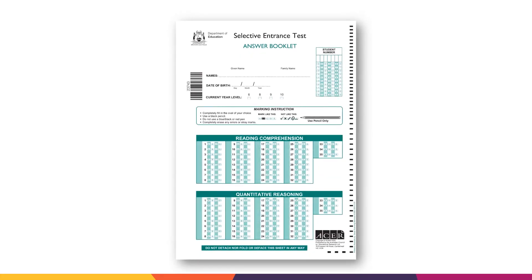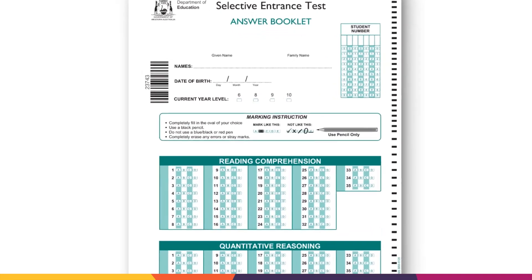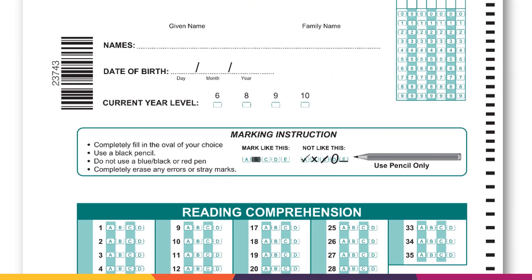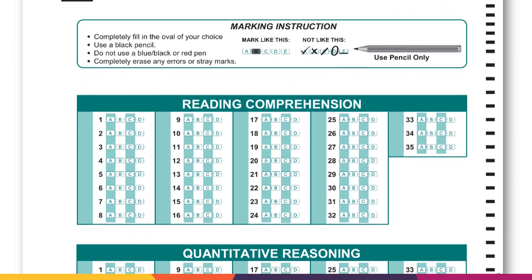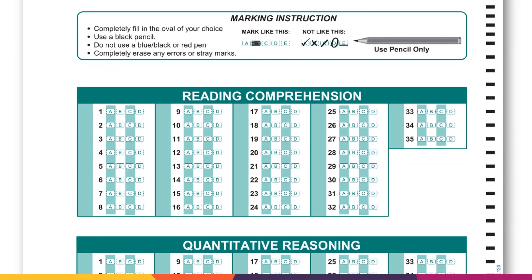Here is an example of the answer booklet where you record all your answers for all four of the tests. You can write on the test booklets for any working out, but you must record your answers in the answer booklet. Fill in the oval for your multiple choice answers using only pencil. This is where you must shade your answers to the reading comprehension test.